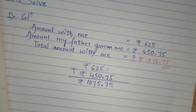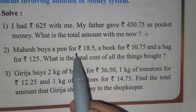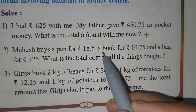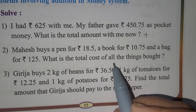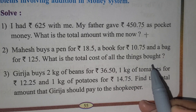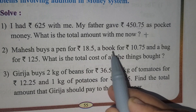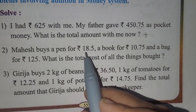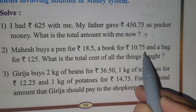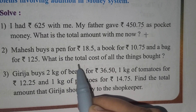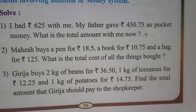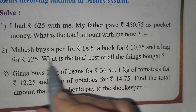So children, while we are solving, just open page number 55 and follow the example. Now let's move to the second one. Mahesh buys a pen for 18 rupees 5 paise, a book for 10 rupees 75 paise, and a bag for 125 rupees. What is the total cost of all the things? So Mahesh buys a pen, a book and a bag. You have to add all these to get the total cost.